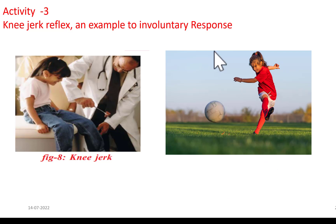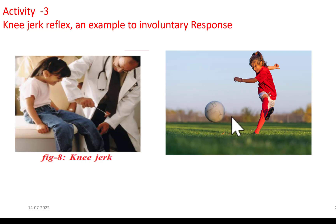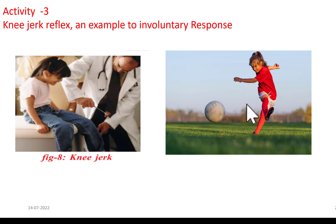Now look at this picture. We find a girl kicking a ball in the playground. This is an example of a voluntary response, because the girl knows in which direction she has to send the ball to make her team win the match, so she makes a conscious effort to send the ball in that direction.